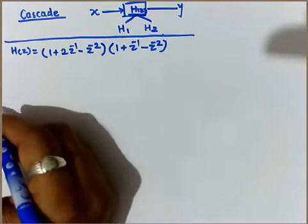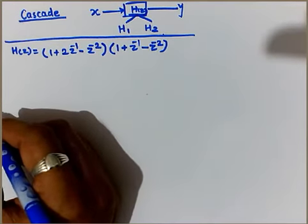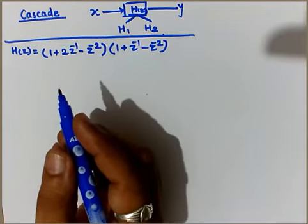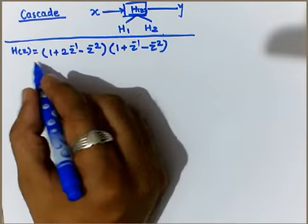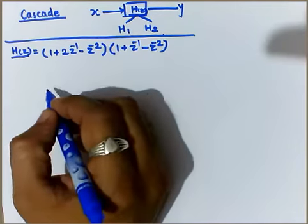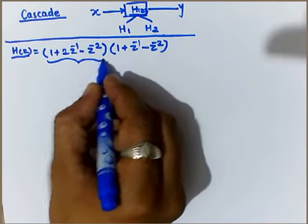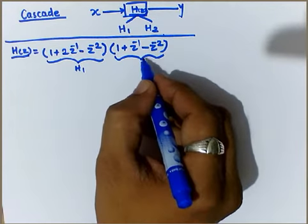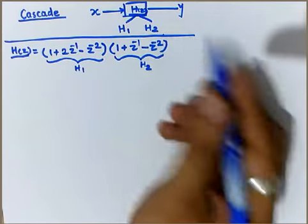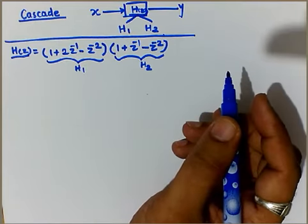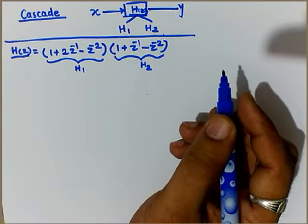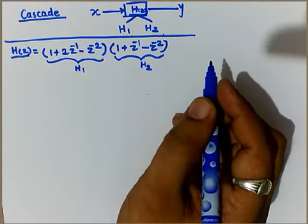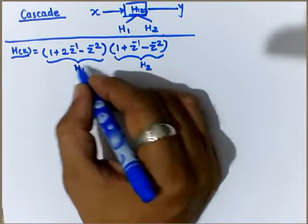This is the h of z given, and we are being asked to draw cascade realization for this particular system function. Here the things are quite clear. Whatever h of z is given, it is already split into h1 and h2. You may assume this as h1 and this as h2.